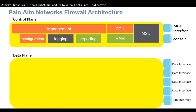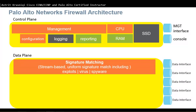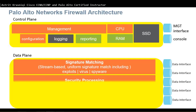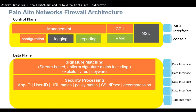In the data plane we have data interfaces. In the data plane we can have signature matching — that's a stream-based uniform signature match including exploits, viruses, and spyware. As well as security processing: we can use App-ID, User-ID, URL matching, policy match, SSL, IPsec, and decompression. We're going to be learning about all of these during our course with Palo Alto Network Firewalls.